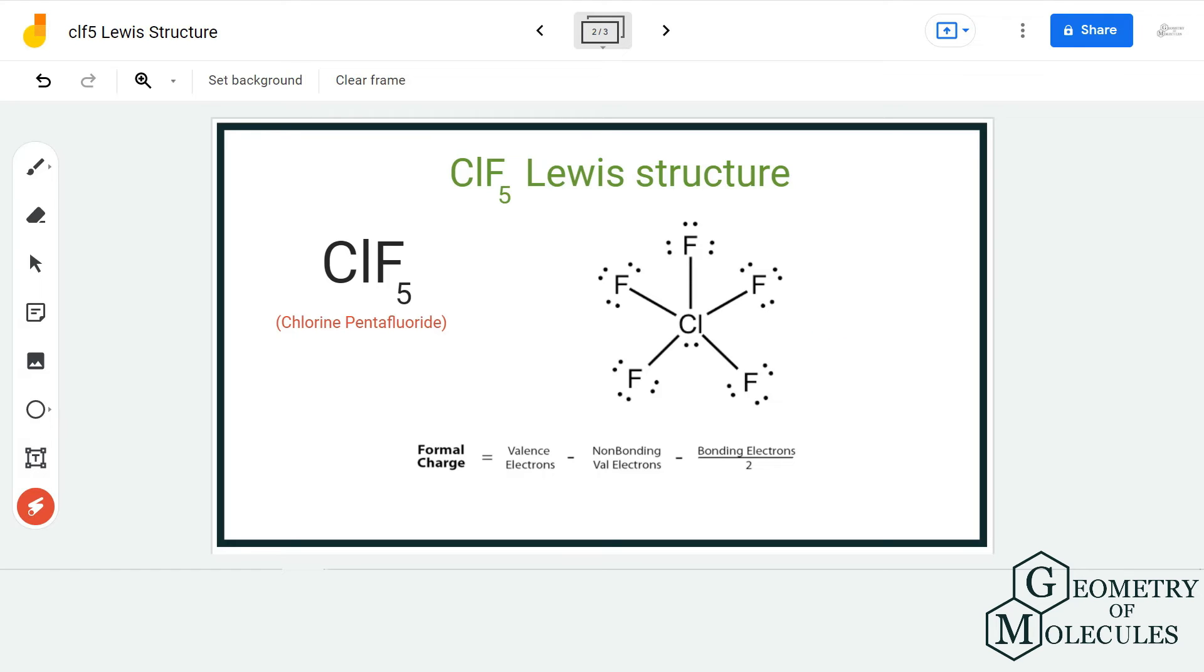So this is the Lewis structure for ClF5. If you have any doubts you can also check the formal charges of the atoms. I am going to calculate the formal charges of chlorine and fluorine here.